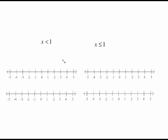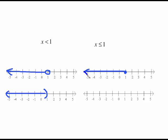Less than is the same idea with the circle, parenthesis, or bracket. For x less than 1, the numbers less than 1 are to the left, so we're going to have an open circle on 1, or the open parenthesis on 1, shading to the left. The reason the parenthesis faces this way is because we are shading to the left. For less than or equal to, we give it a solid circle and still shade to the left. With the bracket, it's a square bracket facing to the left because that's the way we shade.